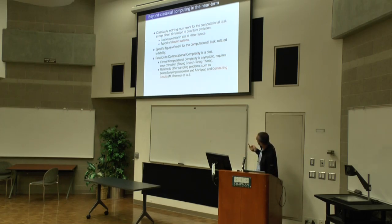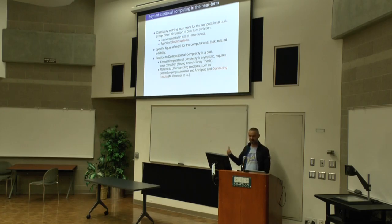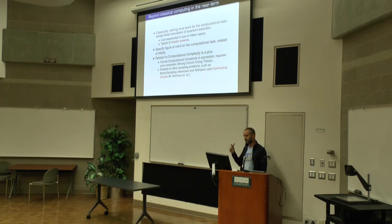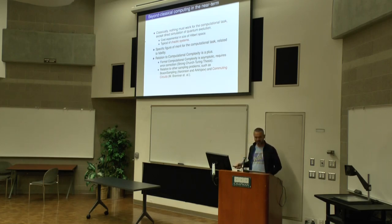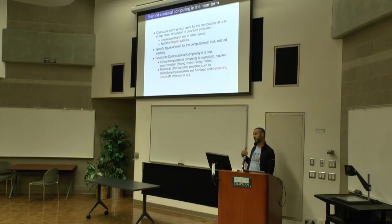The other important thing is that we want to make sure we're doing the right thing. So we want a specific figure of merit for this computational task — we want to be able to measure and certify that we are indeed solving the task approximately. But we're approximately solving the task we wrote on paper. So we need to be able to measure and characterize how well we're doing this: it's going to be a chaotic evolution, and we want to measure how far we are from the true state.